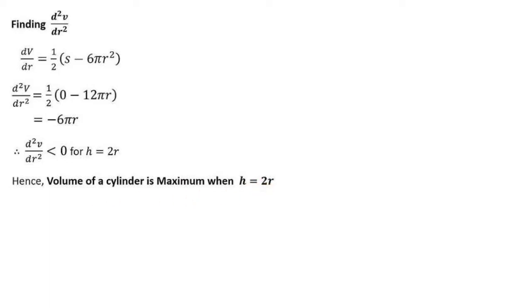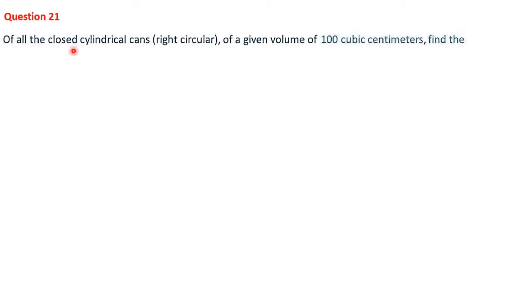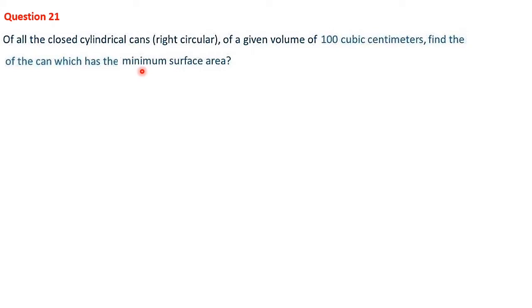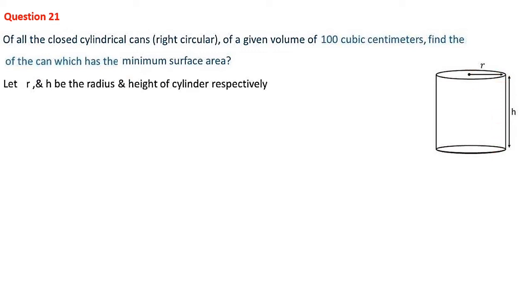Next, question number 21: of all the closed cylindrical cans of a given volume of 100 cubic centimeters, find the dimensions of the can which has the minimum surface area. Here the volume is fixed at 100 cm³ and we have to minimize the surface area — just the opposite of the previous question where surface area was fixed and volume was maximized.